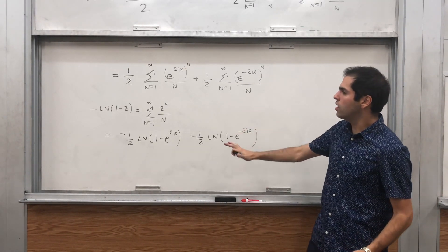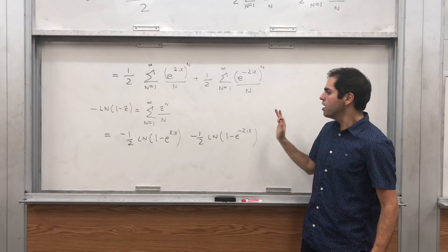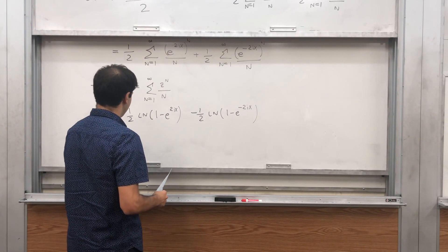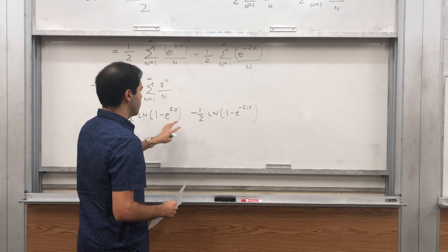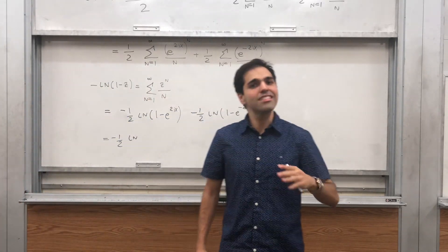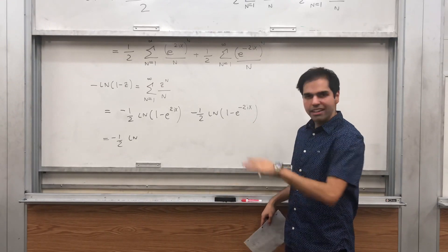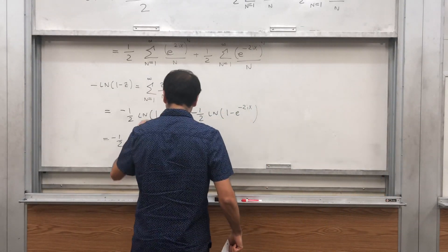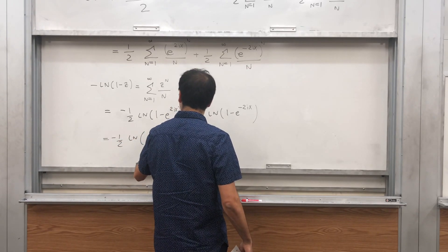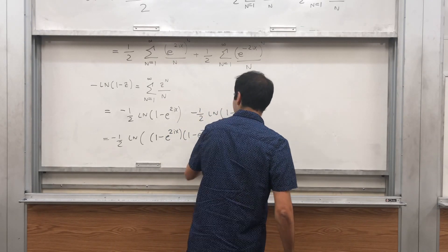You're right to note that this thing has absolute value 1, so maybe we're not in the interval of convergence — this is absolutely something to worry about, but today we're just doing a formal calculation. What this becomes: we combine the two logarithms. For real numbers, ln(a) + ln(b) = ln(ab); for complex numbers we must be careful, so this is technically modulo 2πi. Formally, this becomes -½ ln((1 - e^(2ix))(1 - e^(-2ix))).